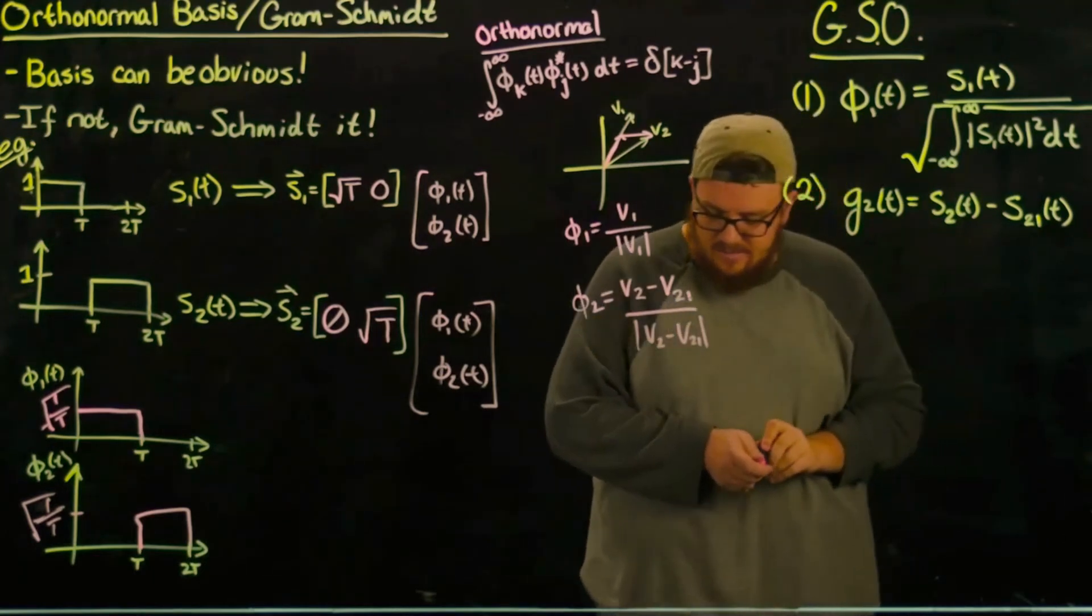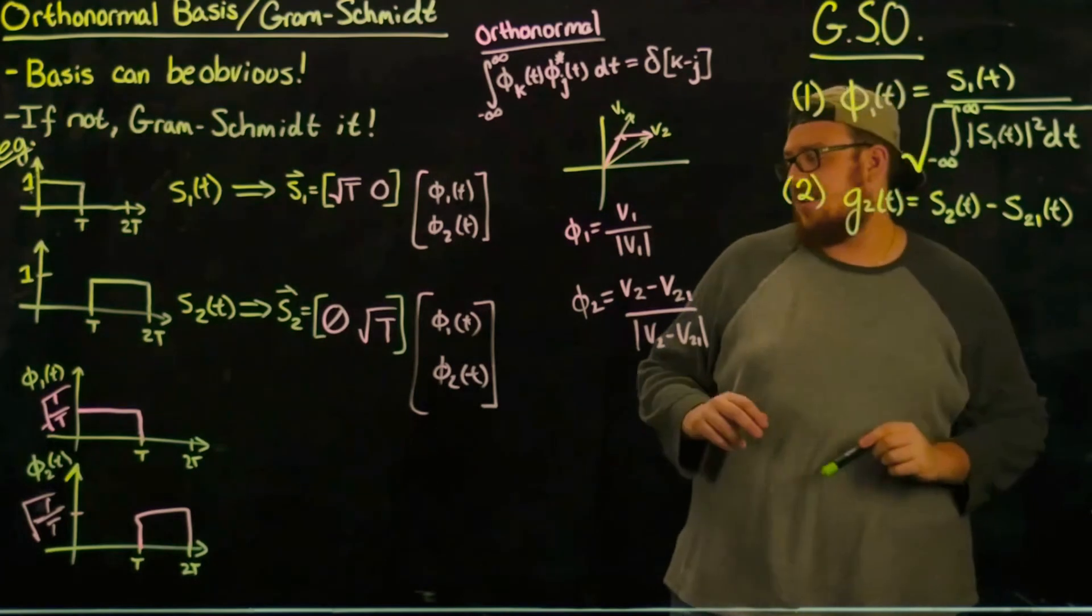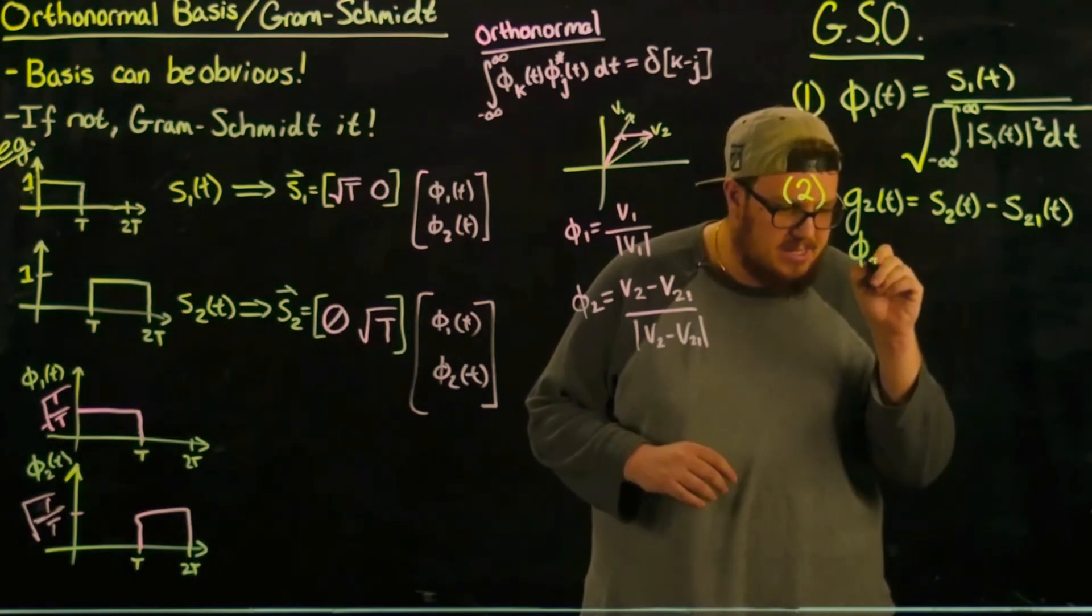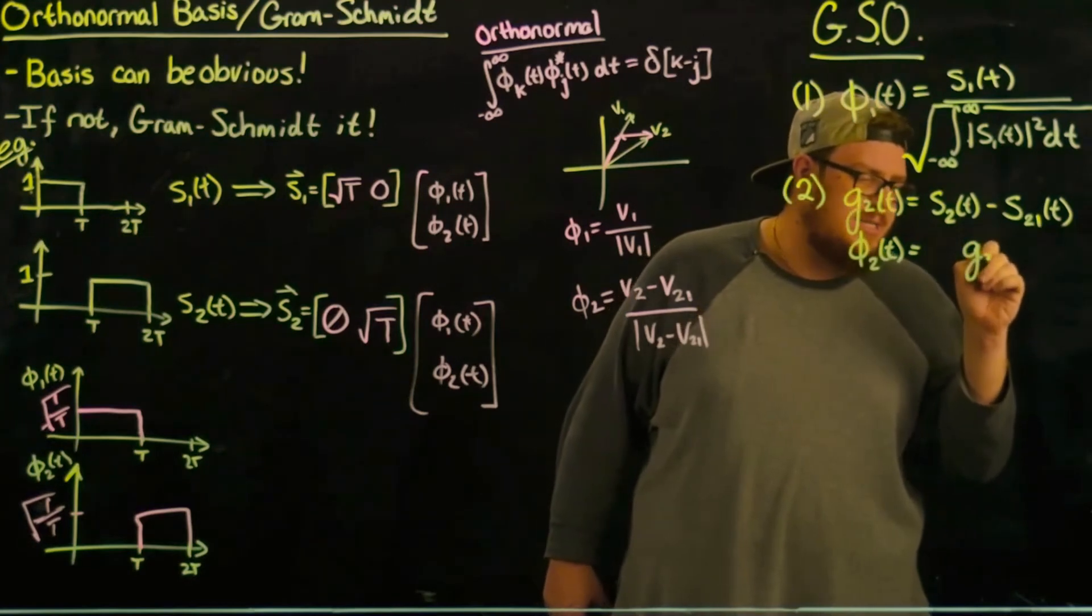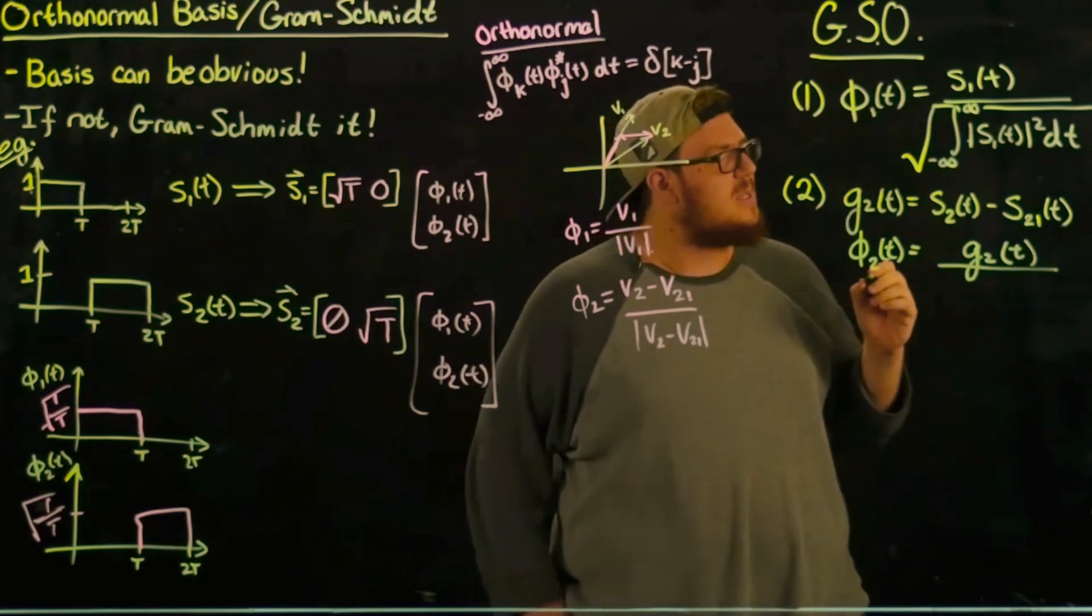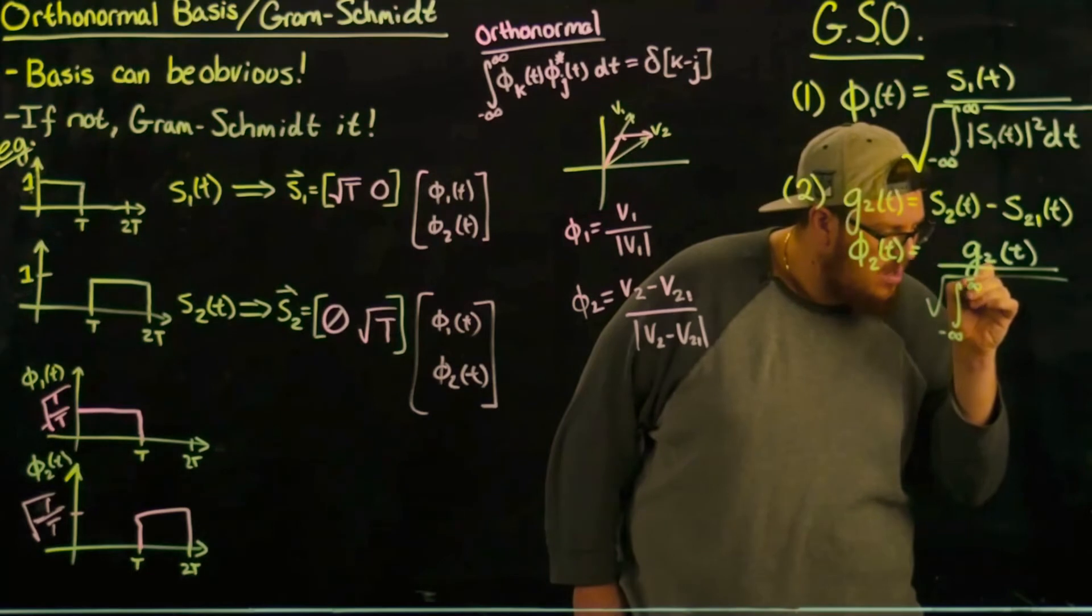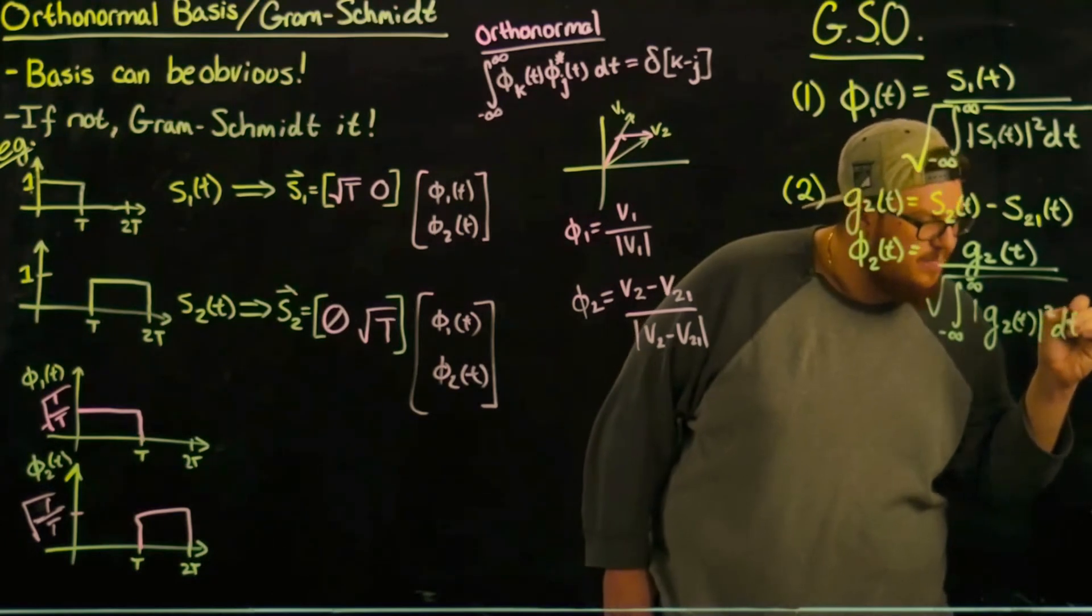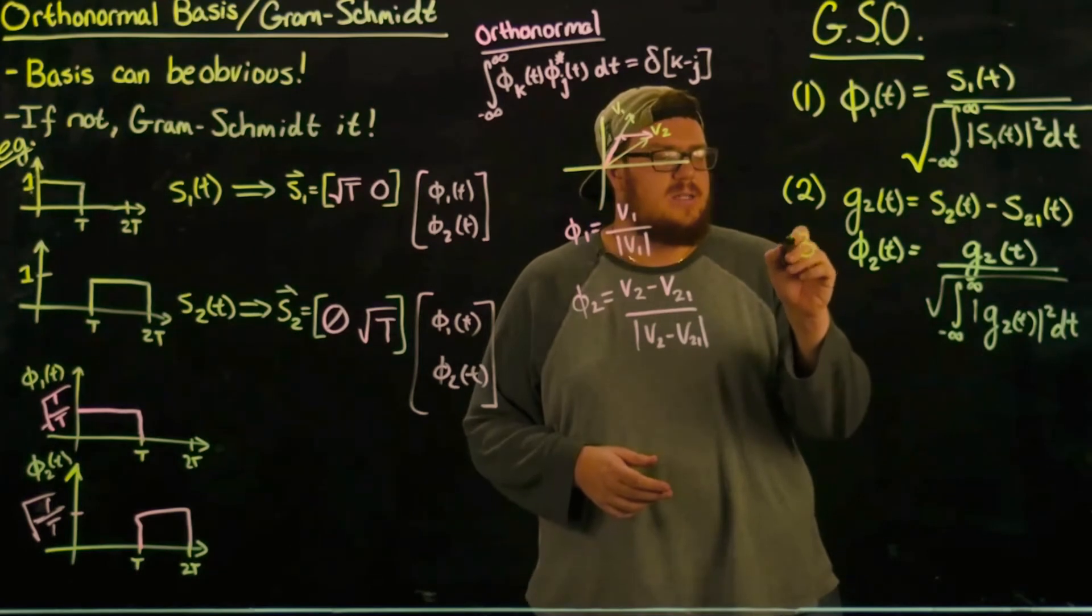So over here we call this thing g_2, we subtract off the projection onto the previous basis, and then we call φ_2 the second basis vector. The same as up here but instead of with the original signal we do it with the signal with all previous components subtracted off. So it's g_2(t) divided by the square root of the integral of the magnitude of g_2(t) squared dt.